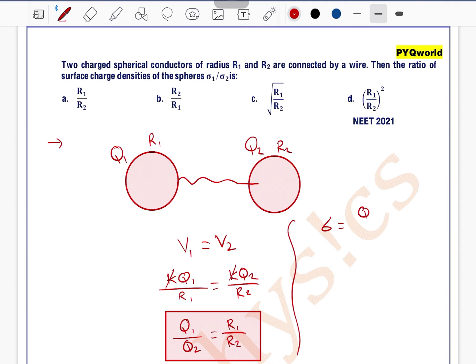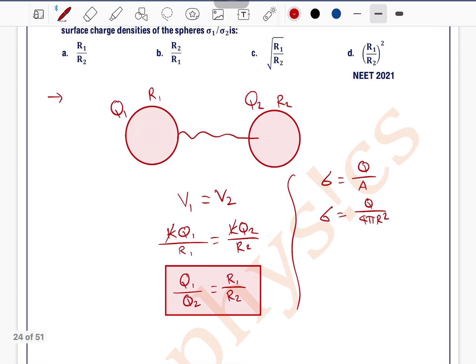Now the ratio of surface charge density. We know surface charge density equals q divided by area, and sphere has area of 4 pi r squared. So sigma 1 by sigma 2 equals q1 by q2 into r2 by r1 squared.